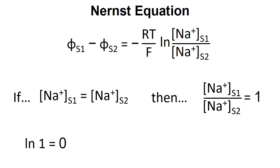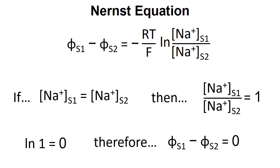If we consider the situation where the concentrations are equal, then the ratio of sodium ion concentration S1 divided by sodium ion concentration S2 equals 1. The log of 1 is 0, so the overall potential difference will be 0 as well. This mirrors what we discussed earlier in terms of the charge separation being equal on both sides when concentrations are the same, so we can see that the maths stacks up with the mechanism.